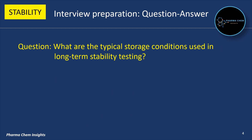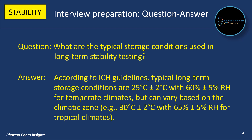Next question: What are the typical storage conditions used in long-term stability testing? According to ICH guidelines, typical long-term storage conditions are 25°C ±2°C with 60% ±5% RH for temperate climates, but can vary based on the climatic zone — for example, 30°C ±2°C with 65% ±5% RH for tropical climates.